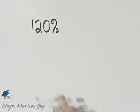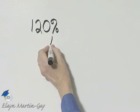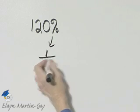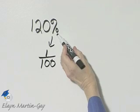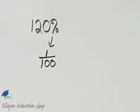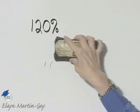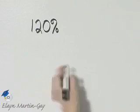Let's write this percent as a fraction or a mixed number. Keep in mind what percent means. Percent means per hundred. So what I'll do is replace the percent symbol by 1 over 100, and then I'll simplify the fraction.